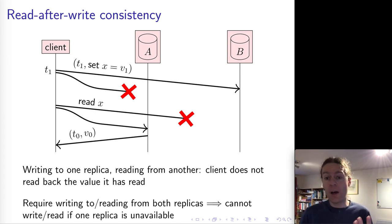But now if we require a read or write to go to both replicas, then the system is not fault tolerant. Because if just one of the two replicas becomes unavailable, then we can't process reads or writes anymore.